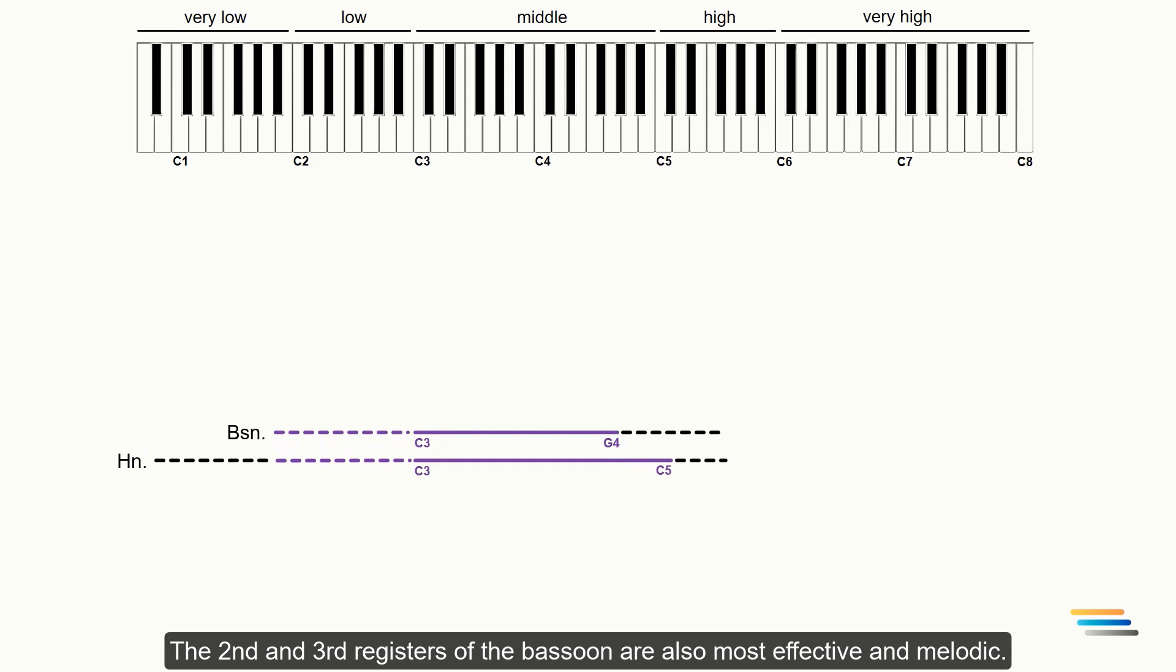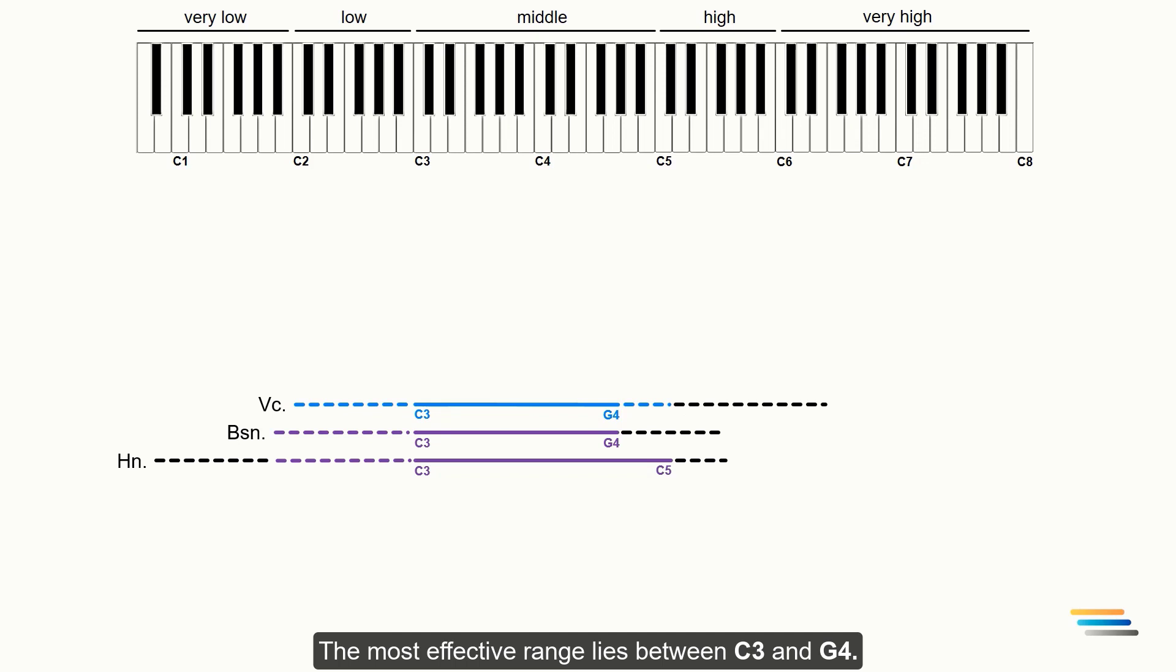The second and third registers of the bassoon are also most effective and melodic. The lower register will be discussed in the next lectures. I removed the fourth register as it has a thinner and piercing quality. The other tenor instrument is the cello. The most effective range lies between C3 and G4. I chose the D and A strings of the cello that are well blended in unison and octave doubling with the alto and soprano instruments. The blue dashed lines indicate the upper and lower limit.